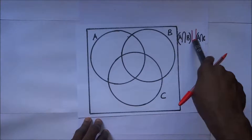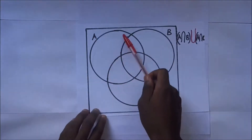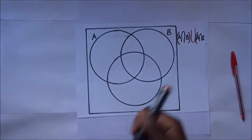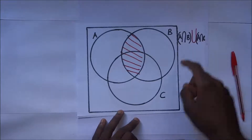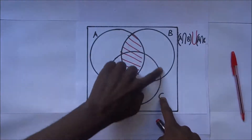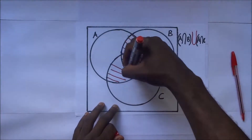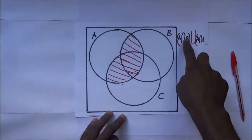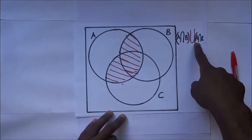Now we have A intersection B union A intersection C. First, what is A intersection B? This is set A and that is set B, so their intersection is this region — we shade it. Then we have A intersection C: this is set A and this is set C, so their intersection is this middle part. When they say union, you shade all of them combined — this part and that part. That is A intersection B union A intersection C.